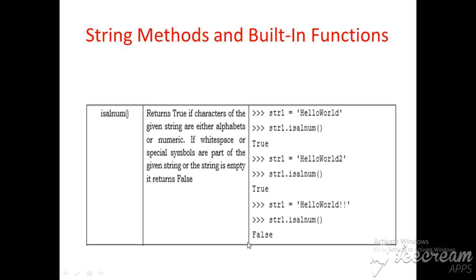Today we study some string methods and built-in functions. The first is isalnum(), which means alphanumeric. It returns true if the characters of a given string are either alphabets or numeric. If whitespace or special symbols are part of the given string, or the string is empty, it returns false. For example, str1 is equal to 'helloworld'.